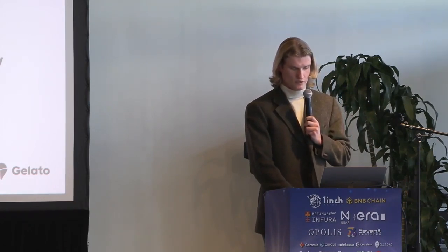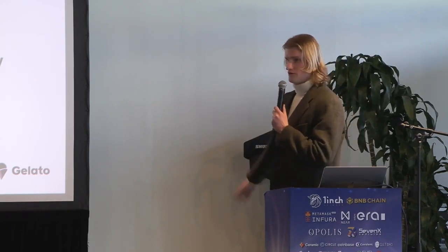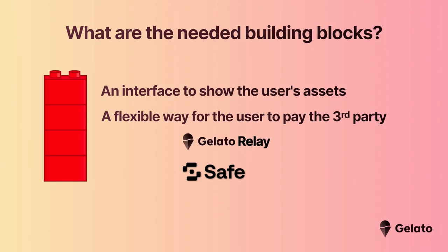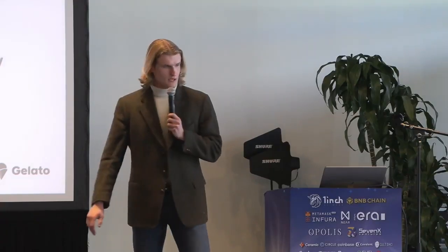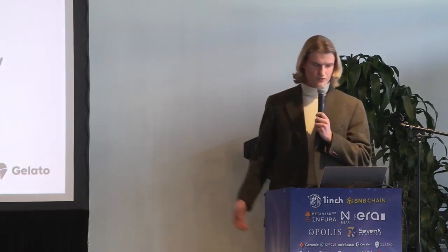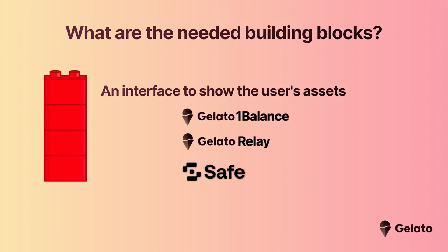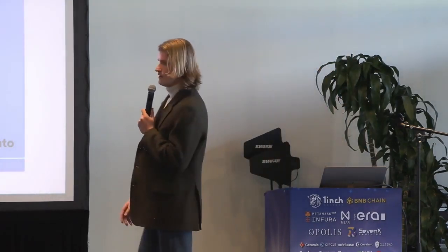We at Gelato are good friends with Safe — we were founded in the co-working space with Safe and they gave us our first grant. We decided to use Safe, but what I'm about to show you works with any smart contract wallet: Ambire, Argent, anything. We have also built Gelato Relay, which has been up for almost two years with features we think are pretty cool. And we have Gelato OneBalance, which lets you pay for all your transactions across all chains when you talk to us. Finally, our new project: the Gasless Wallet SDK.